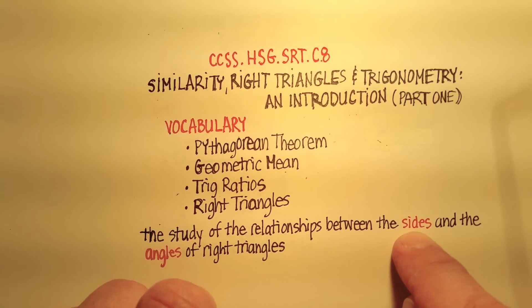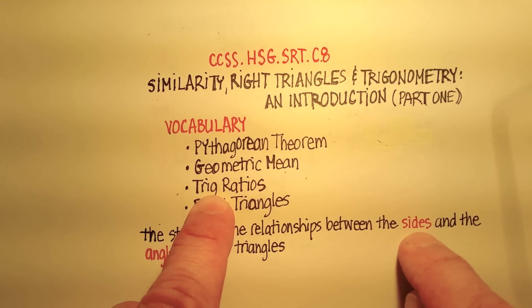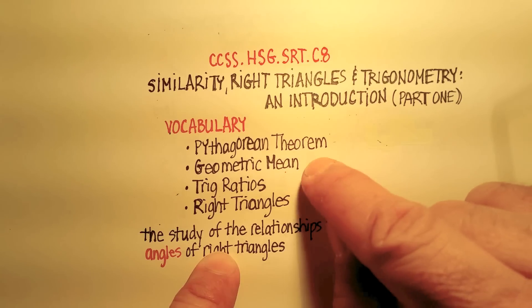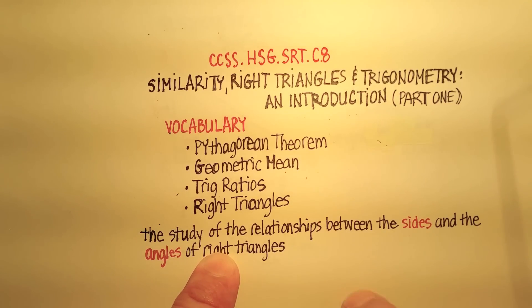Or you can use the geometric mean to find the sides of the right triangle if you have certain other types of information, or you can use trig ratios to find the sides of right triangles using certain kinds of information. And you have to decide which one of these three methods is the best way to go depending on the information that you do have.